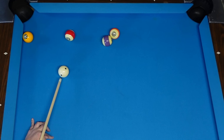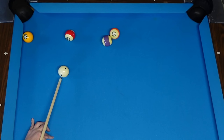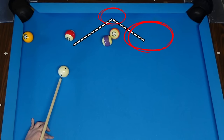Keep in mind this method of predicting the path of the cue ball after it hits an object ball only works if you are hitting the cue ball with topspin. Once you have an idea of where you want the cue ball to go, you have to envision how it's going to get there. In this situation we want the cue ball to hit this area of the rail and land in this area of the table.